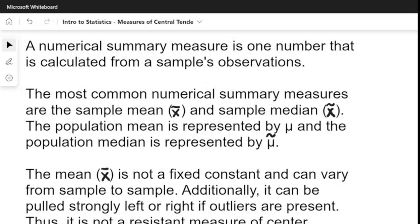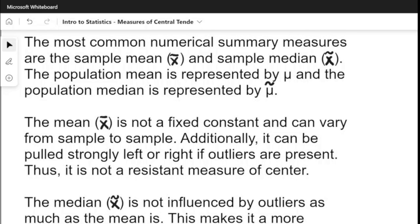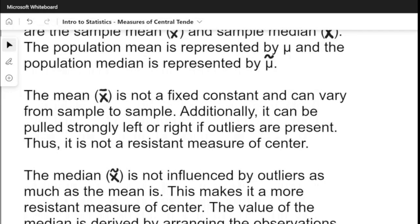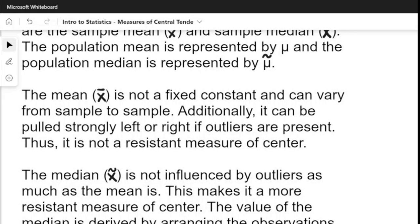The most common numerical summary measures are the sample mean, denoted by x-bar, and the sample median, denoted by x with a tilde. The population mean is represented by μ, and the population median is represented by μ with a tilde.